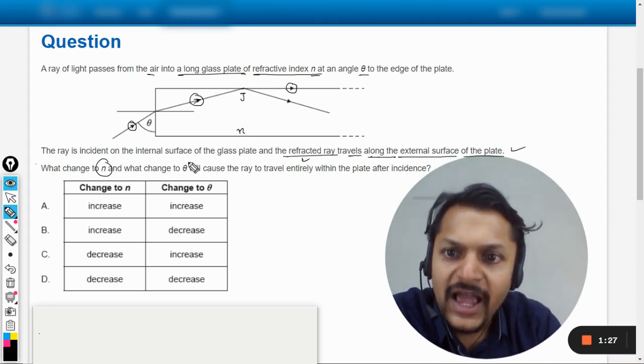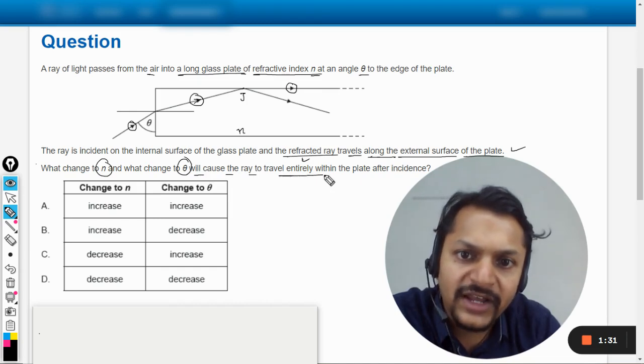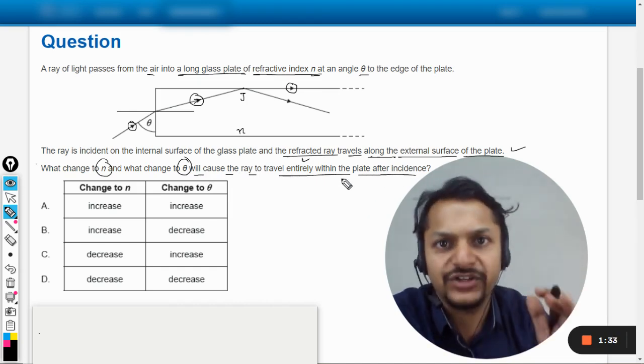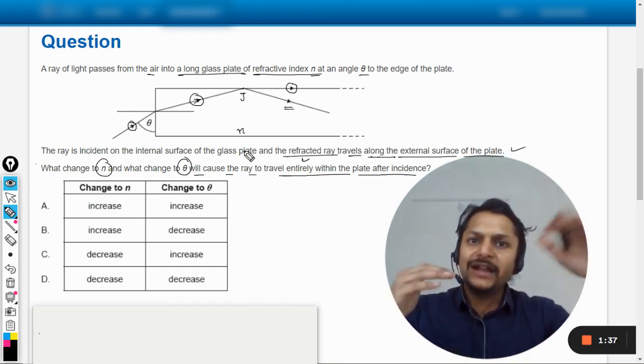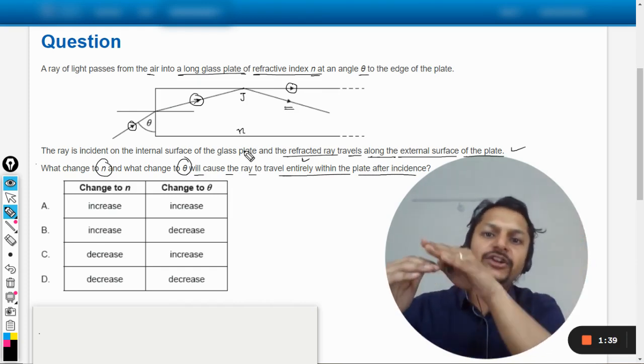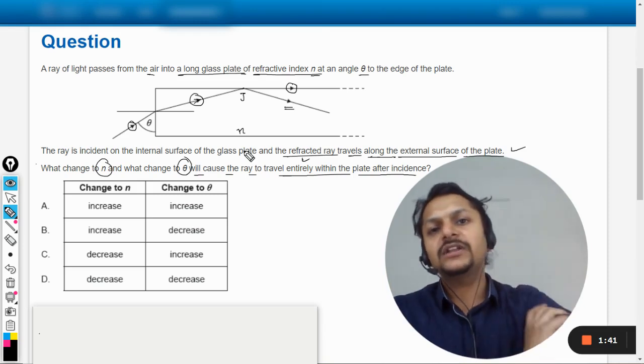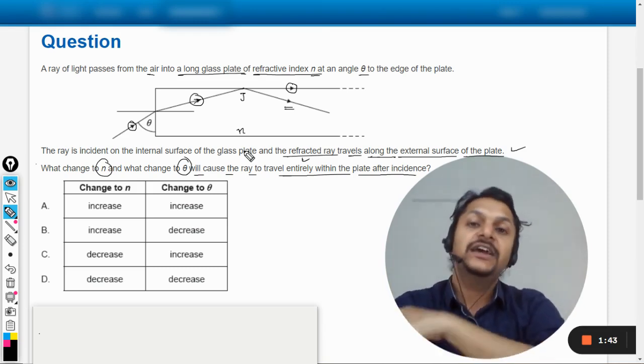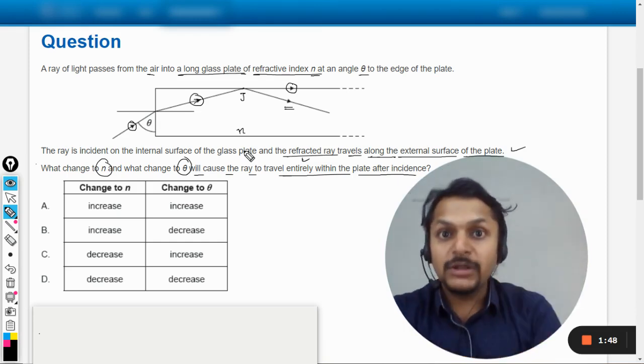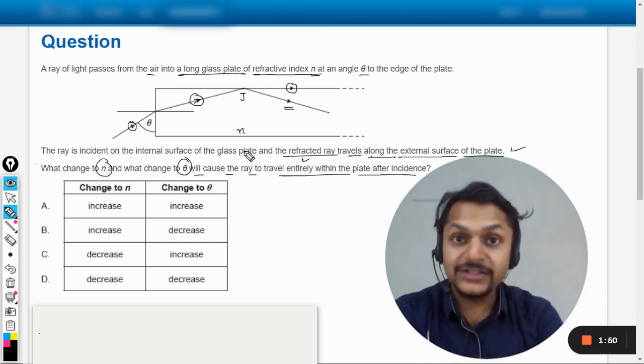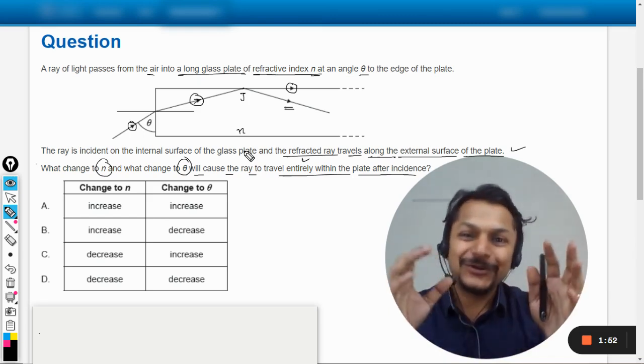Now, what changes to n, so what we should do in regards to the refractive index of the material, or the theta, will cause the ray to travel entirely within the plate after the incidence? So what we want is we want this thing to happen, that the radiation should now bend and it should move into the glass. So what are the changes that you would be suggesting in the refractive index and in the angle theta? The first problem in this question is understanding the statement, I would say, because it's quite confusing again, isn't it?